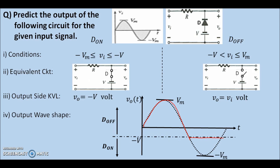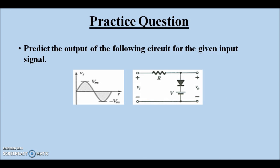And again, for dOn region, the output follows the input. Therefore, this region. Now, finally, this red curve shows the output waveshape, which is the desired solution. Here is a practice question for you. You need to predict the output waveshape for the given circuit and the given input waveform.